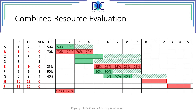We can do the calculations for periods three and four, which gives us a commitment of 70%. This is okay — we are below 100%, and we don't have to take any measures at this moment. When we look at periods five and six and calculate the commitment, we see that the commitment is respectively 115% and 155%.